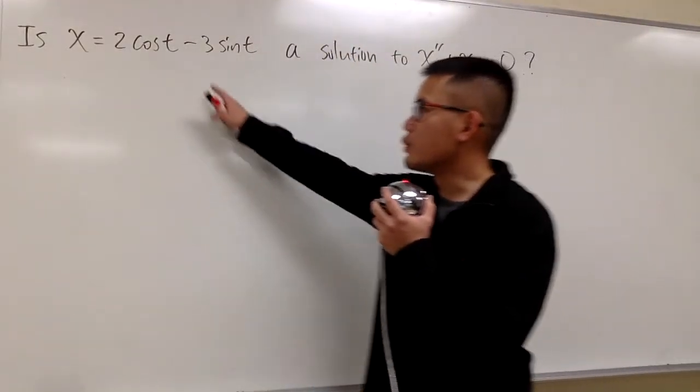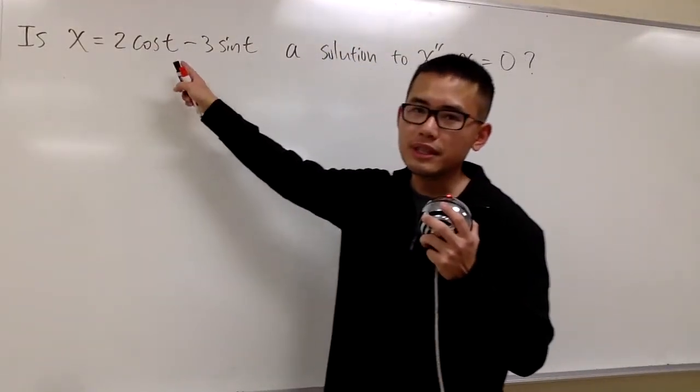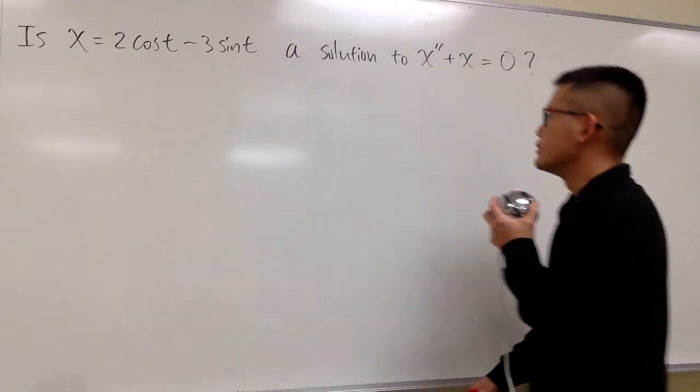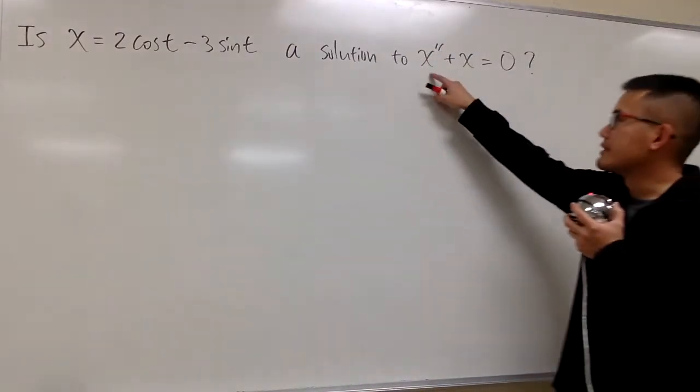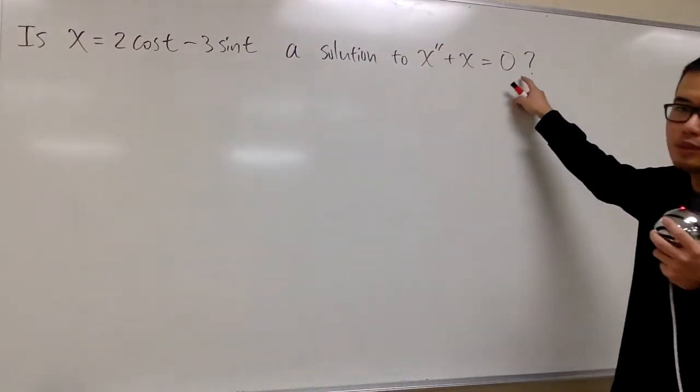All right, we are going to verify if this equation, x equals 2 cosine t minus 3 sine t, is a solution to this differential equation, x double prime plus x equals 0.